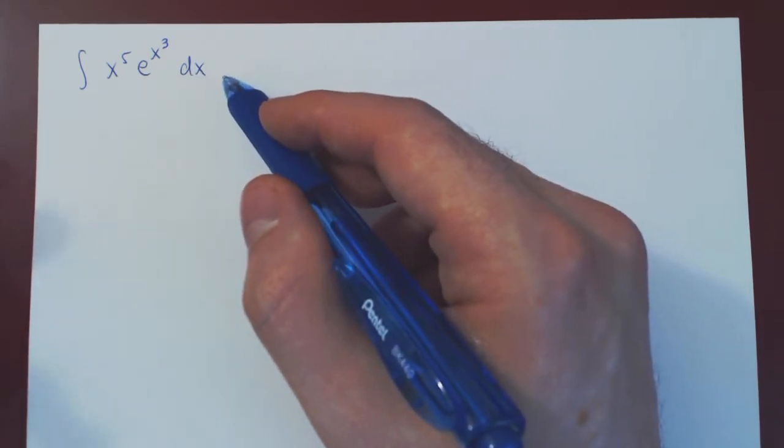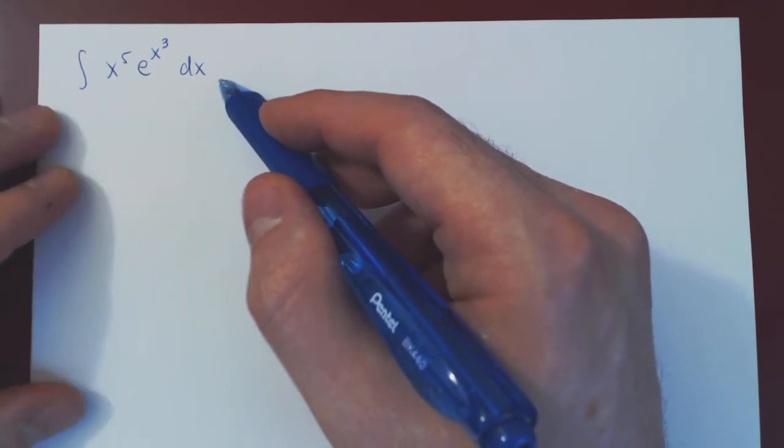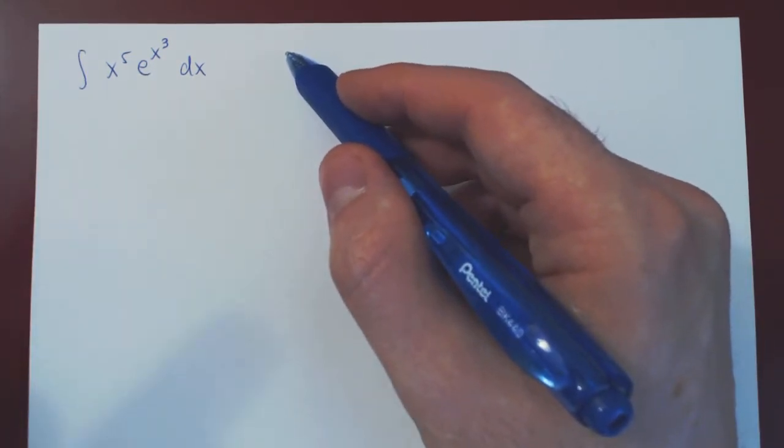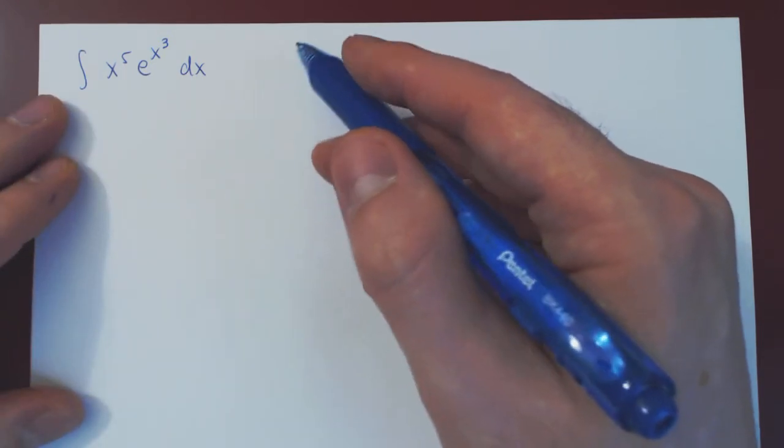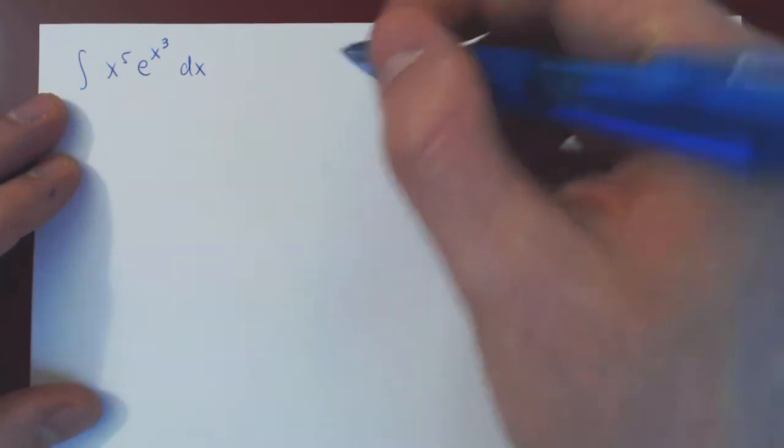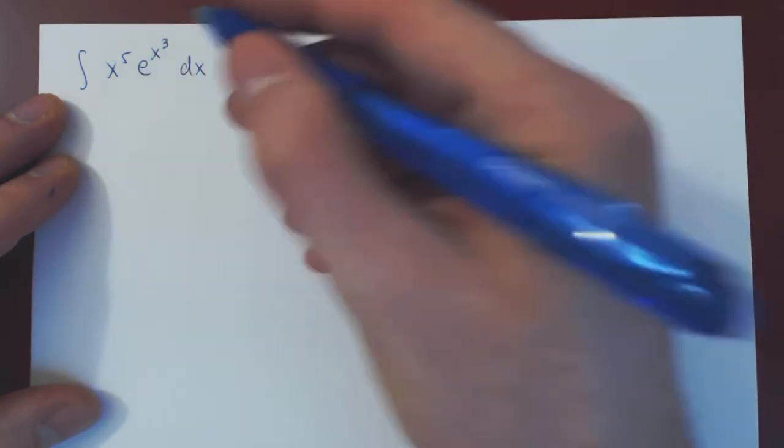Now, because I always want to use u and v when applying integration by parts, when I make my quote-unquote u-substitution here, I will use a different variable than u. Well, let's use w. I will let w be x cubed.